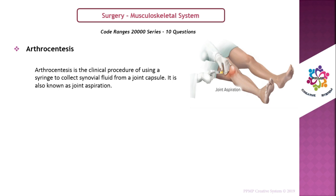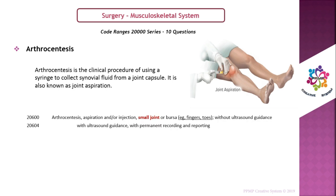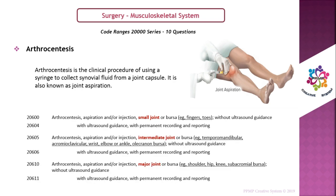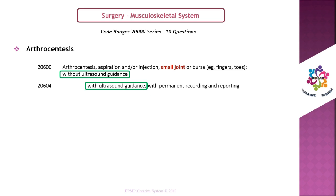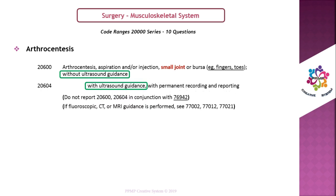Arthrocentesis is the clinical procedure of using a syringe to collect synovial fluid from a joint capsule; it is also known as joint aspiration. Arthrocentesis procedures are sub-classified into three types based on joint type: small joint, intermediate joint, and large joint, further sub-classified based on imaging guidance. Code 20600 denotes without guidance; 20604 denotes with ultrasound guidance. Note that code 76942 — ultrasound guidance — should not be reported with 20604, because ultrasound guidance is already included in 20604's description.